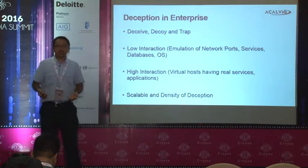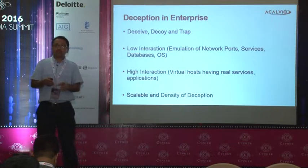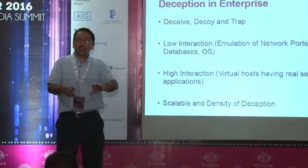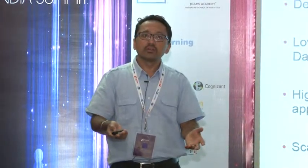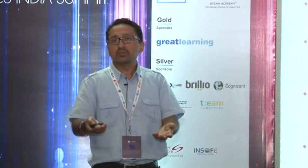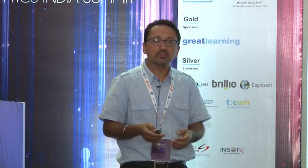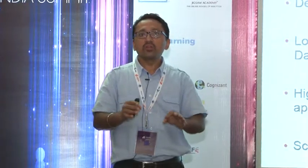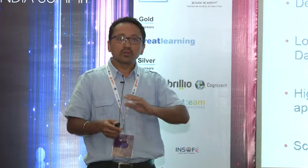Deception in the enterprise means we have to deceive, decoy, and trap the attacker. You have to do it at multiple levels with a lot of variety. At the low interaction level, you do deception at the port level, or emulate certain services, operating systems, or databases. At the high interaction level, you have full-blown VMs that actually deceive the attacker with real-looking environments. Deception cannot be variety alone — you need density and scale as well, and it should be dynamic and changeable.